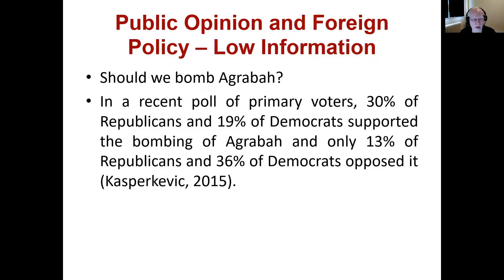Here's another example, from 2015 — around the time of the presidential primaries, in the lead up to the election that brought Donald Trump into power. The simple question in the survey was: should we bomb Agrabah? In the poll of primary voters, 30% of Republicans and 19% of Democrats supported the bombing of Agrabah, and only 13% of Republicans and 36% of Democrats opposed it.